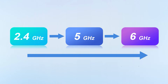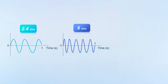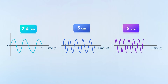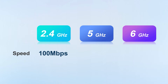In terms of speed, the upgrade from 2.4 GHz to 6 GHz will increase the data transmission speed. Looking at frequency wave graphs, 2.4 GHz moves much fewer cycles per second, meaning it is slower, while 5 GHz and 6 GHz are faster. Generally, the 2.4 GHz band can provide speeds up to 100 MB per second, 5 GHz up to 1 Gbit per second, and 6 GHz up to 2 Gbit per second.